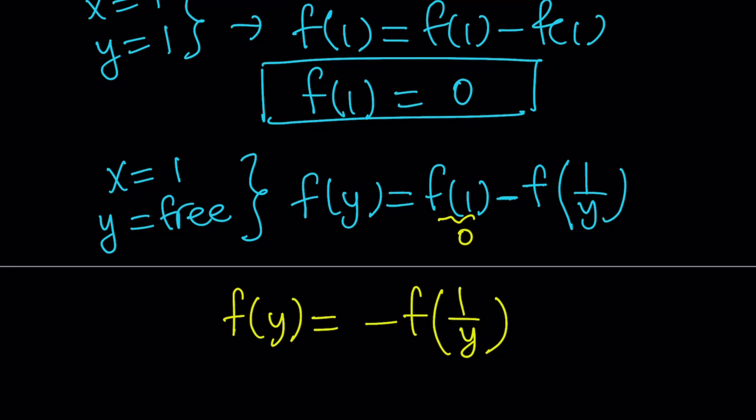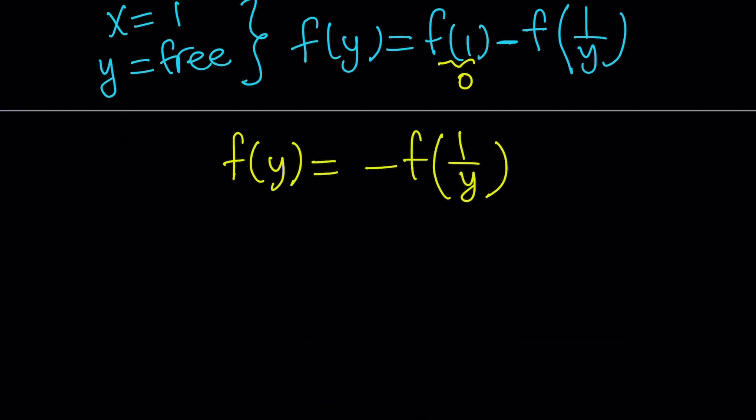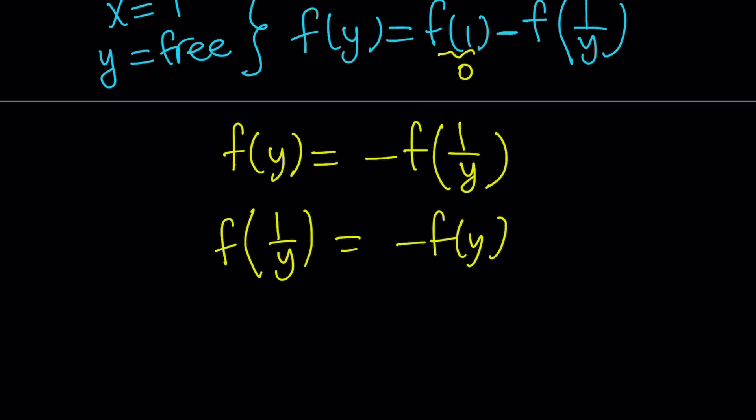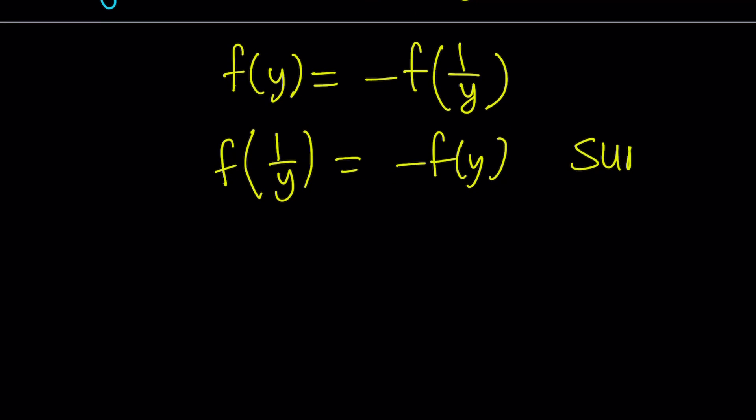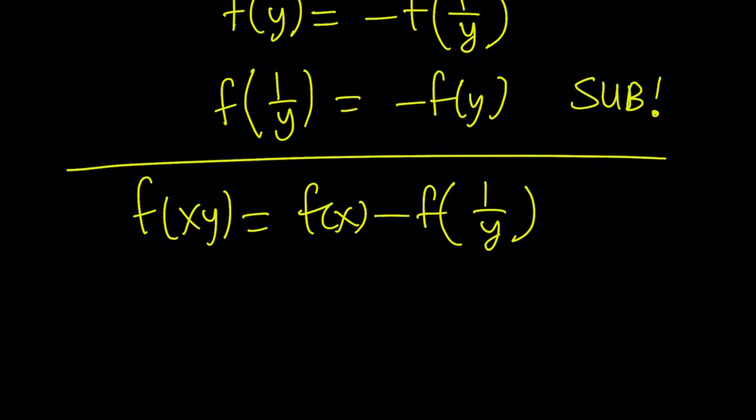So we're going to substitute something here, but notice that in our original problem we have f of 1 over y. So let's go ahead and isolate that. f of 1 over y can be written as negative f of y. So now let's go back to the original equation and substitute this. So we're going to sub. We have f of xy equals f of x minus f of 1 over y. And now we're going to replace f of 1 over y with this.